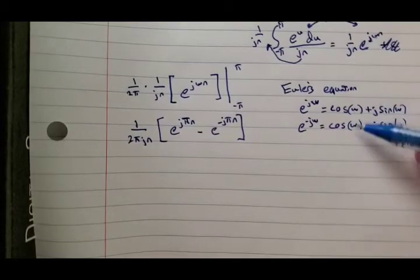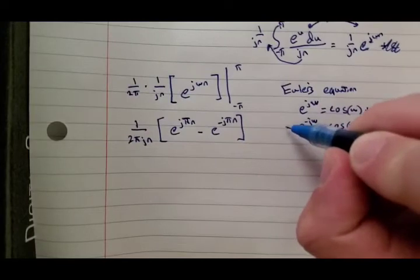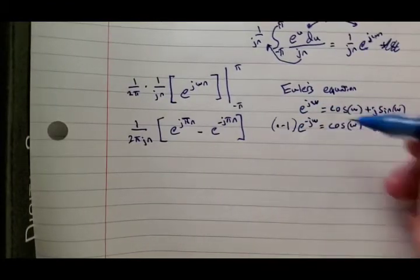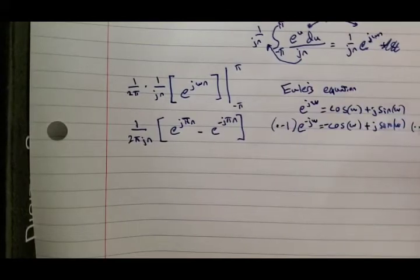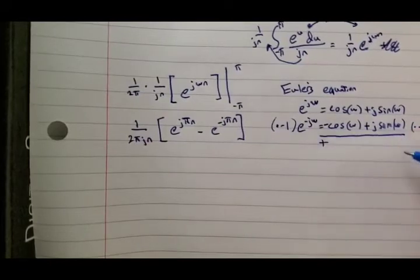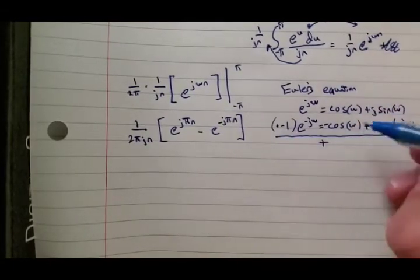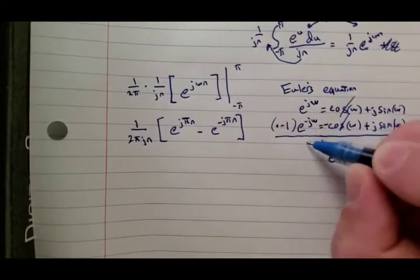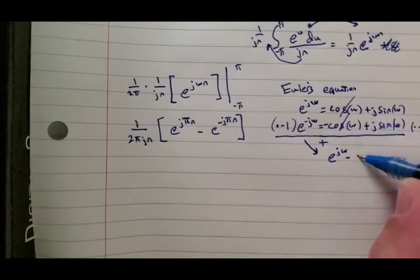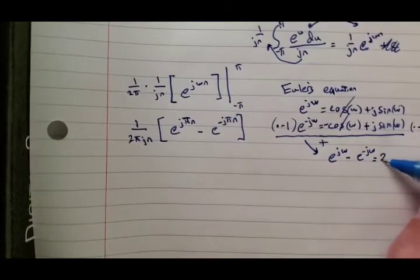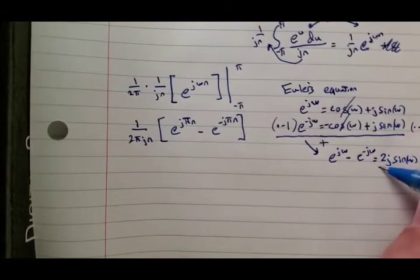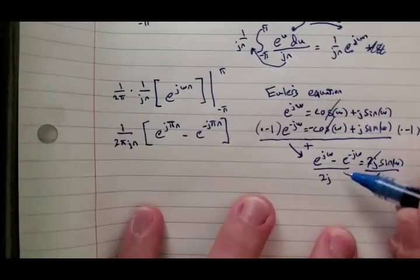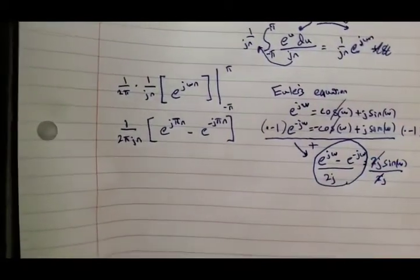Well, we can see we have here these two cosines, and to get those to cancel out, if we multiply both sides by negative 1, then we have negative cosine plus j sin(ω), and we are going to add these two. The cosines are going to cancel out, and so we're going to have e^(jω) minus e^(-jω) is equal to 2j sin(ω). If we divide both sides by 2j, then we just have sin(ω) is equal to this equation, which is in terms of complex exponentials.